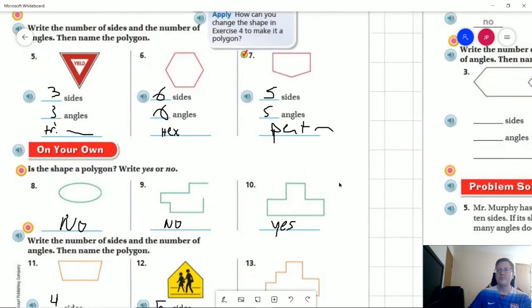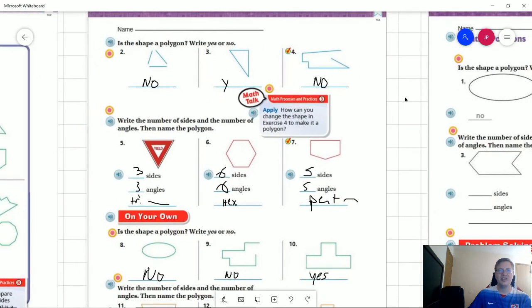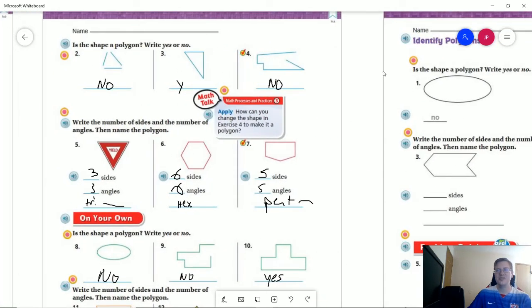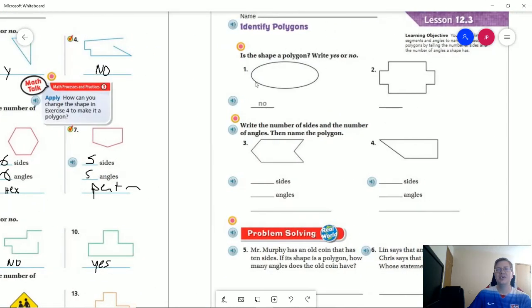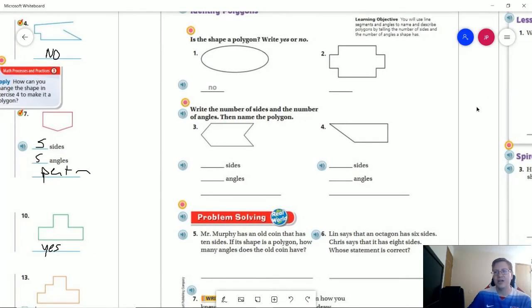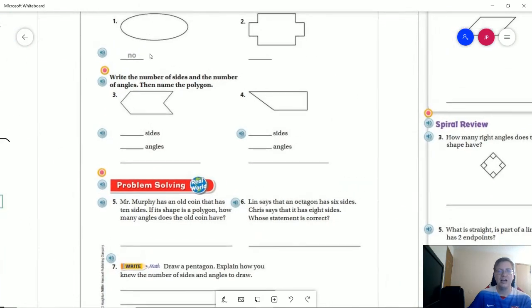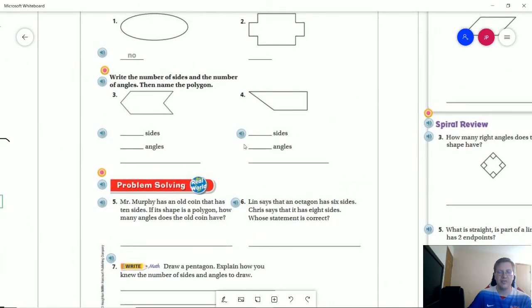For the homework for today, again if you were confused on whether number eight was the correct answer or not, if you look at number one for the homework we would see that. So again for a polygon we are looking for a closed shape made up of only line segments, we can't have any curves or arcs in there.